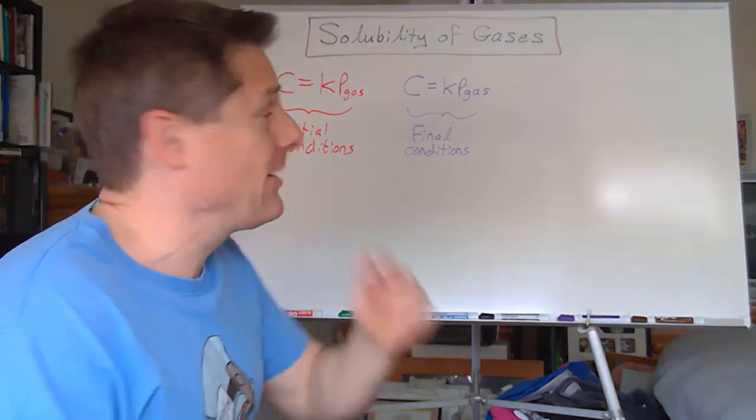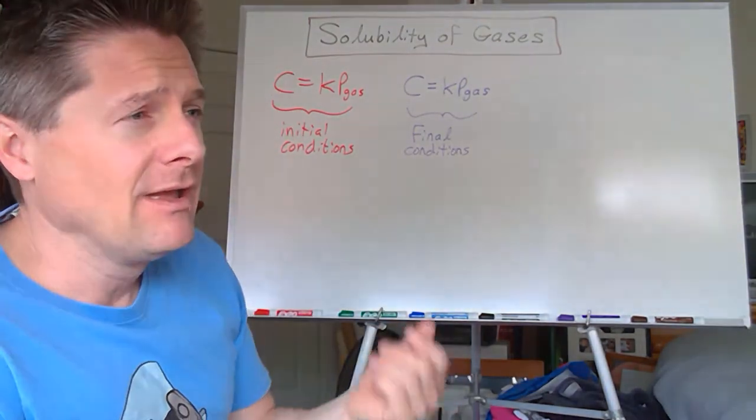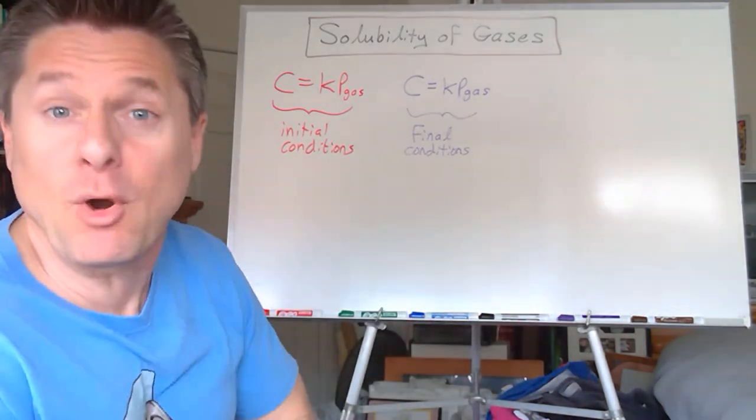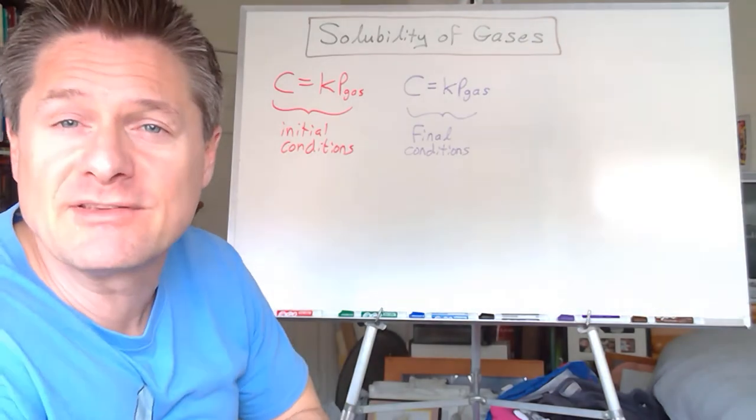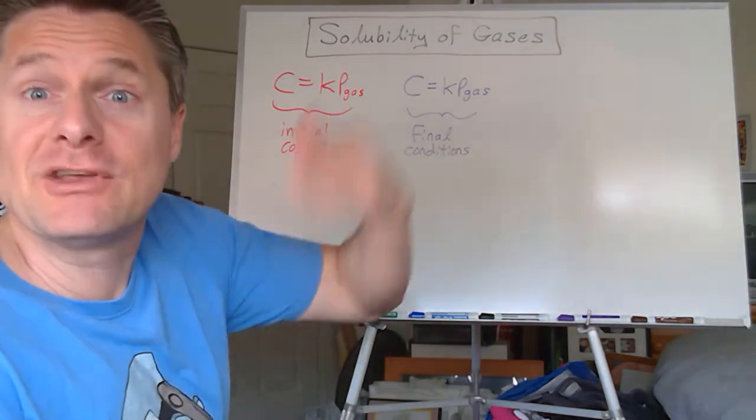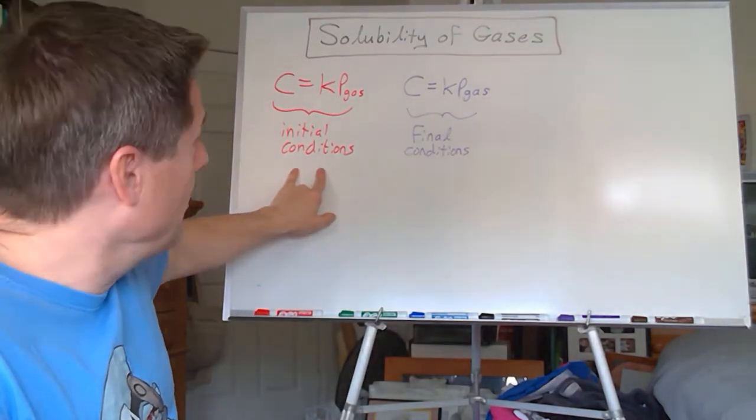All right, let's take a look at Henry's law for changing conditions. Let's say we alter the external pressure, which alters the partial pressure of the gas. However you do it, maybe change the volume. But the partial pressure of the gas increases or decreases above the solution. Or we change the concentration. How does that change the partial pressure above it? Let's say we've got some initial conditions here.